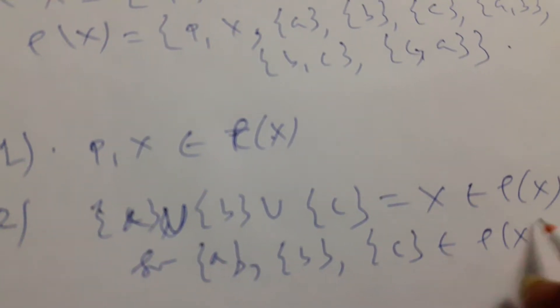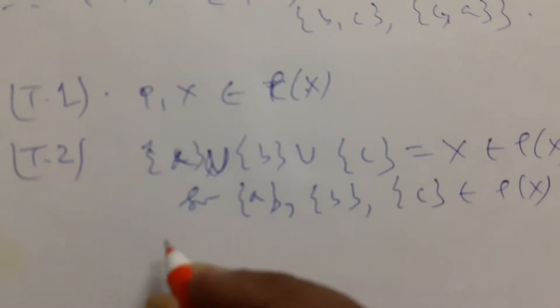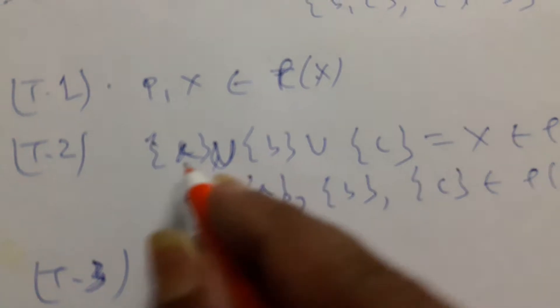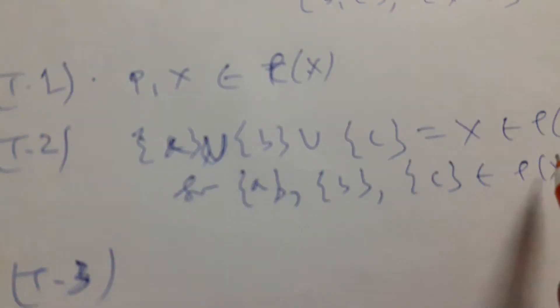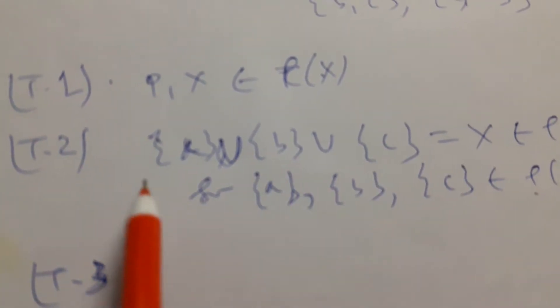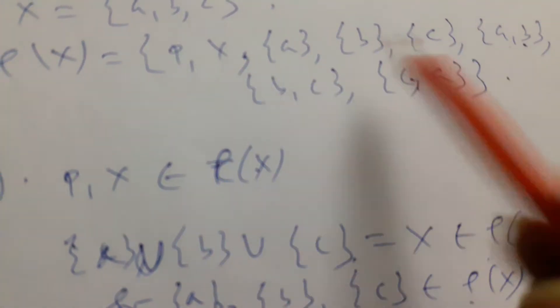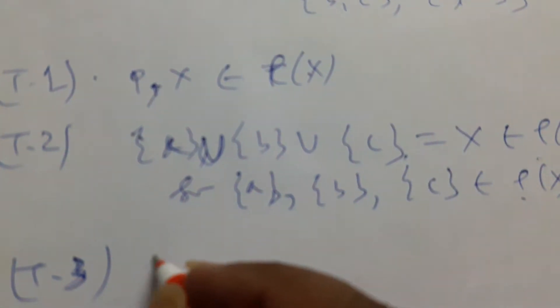These are members of ρ(X), therefore T2 is satisfied. For T3, that is the arbitrary union: any number of members in τ, the union is also in τ. Arbitrary number of members, whatever they may be, we can get this result.